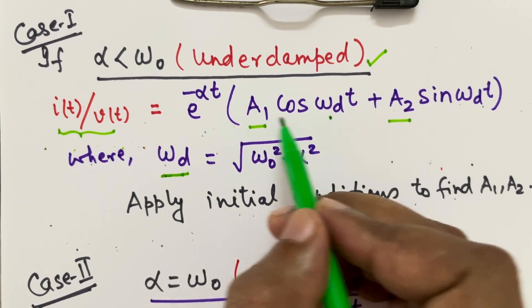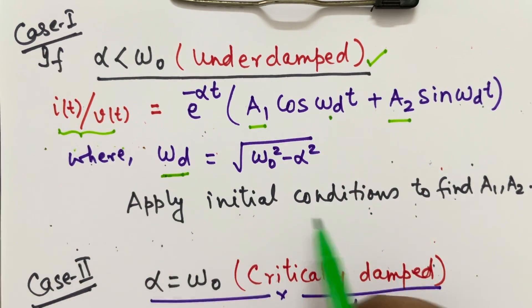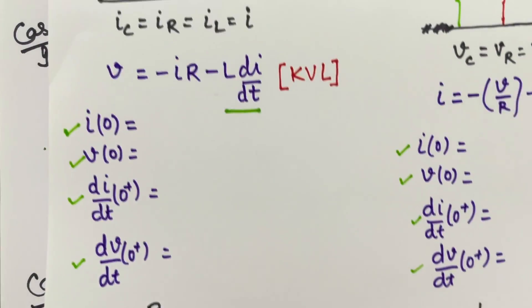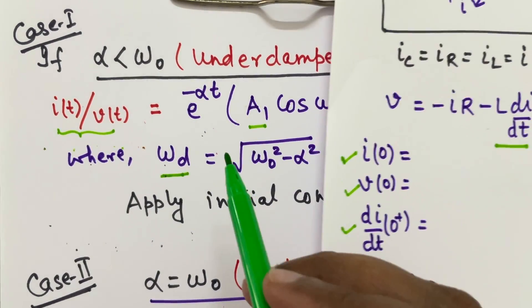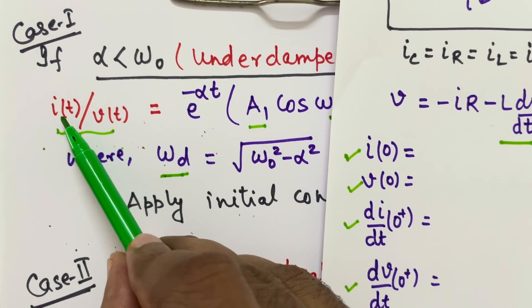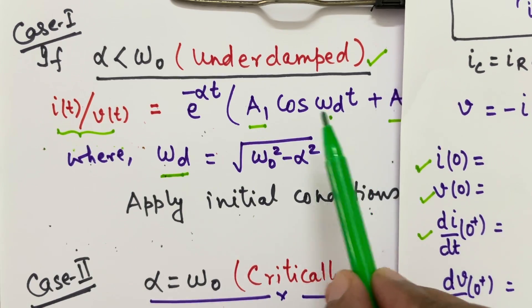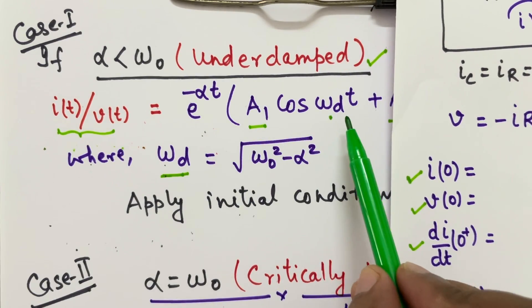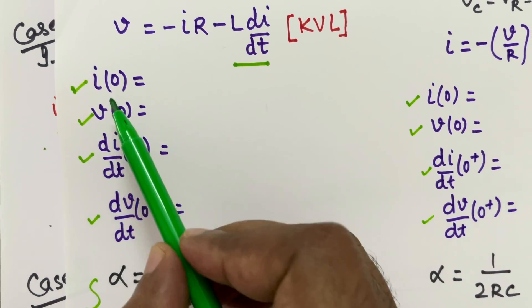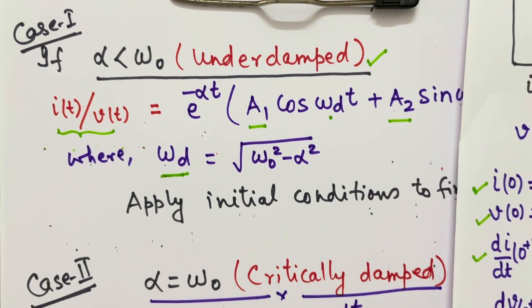Here omega D is known, alpha is also known from here. Only A1 and A2 will be unknown. So that we can find out using the initial condition. Initial condition in the sense I(0), V(0), dI by dT or dV by dT. So how we apply initial condition? We can put if the expression is in terms of I(T), we will put T equal to 0 and then we have an expression. Then we will take differentiation of that, that means dI by dT and then again we apply T equal to 0. So if we know I(0) and dI by dT at 0 plus, we can find out A1 and A2 constant.